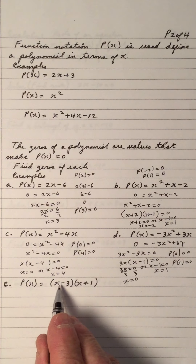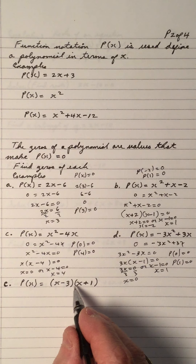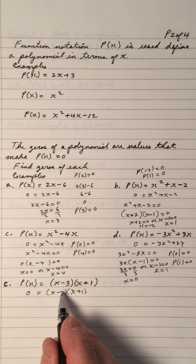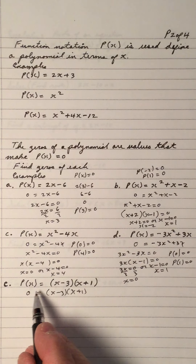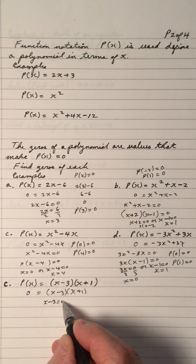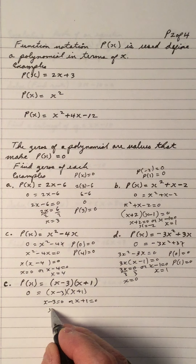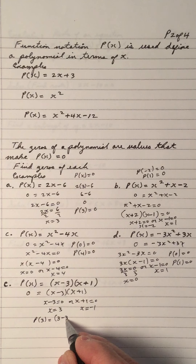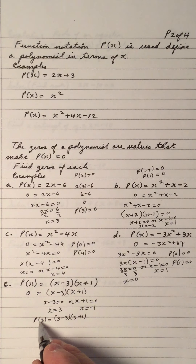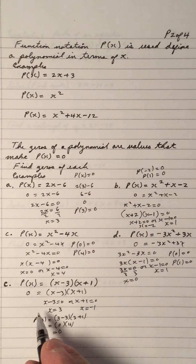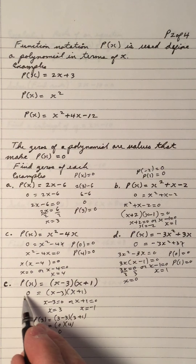This polynomial equation is given in factored form. If we make P of X equal to zero, we get the roots and the zeros of the polynomial. So X minus 3 equals zero, or X plus 1 equals zero, giving X equals 3, or X equals negative 1. The P of 3 should give you zero — let's check: put 3 in the place of X, and you get zero. So 3 is a zero of this polynomial, or 3 is a root of this equation.